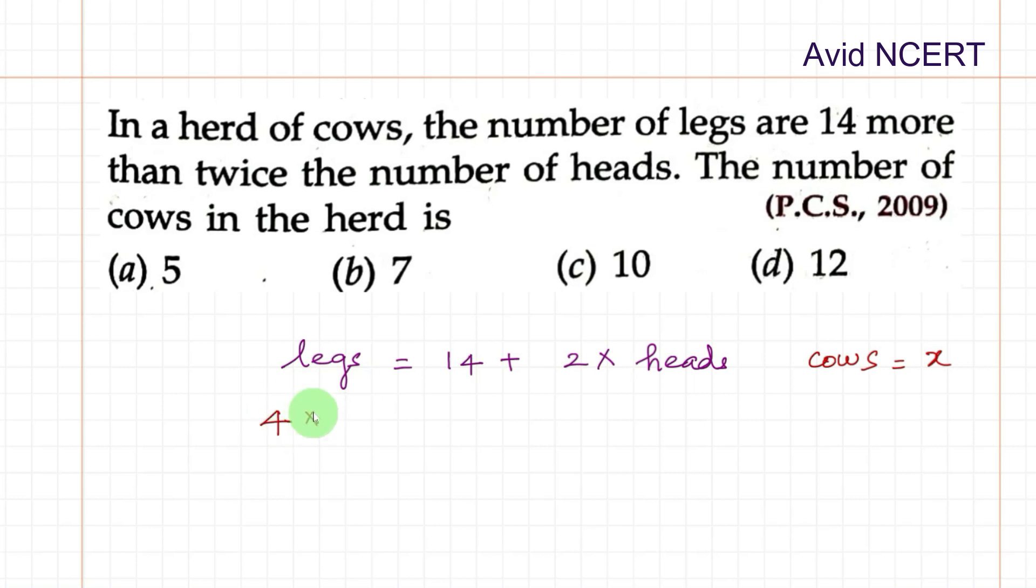So therefore, 4 times x equals 14 plus 2 times the number of heads. Each cow has 1 head, therefore 1x. By solving this we can find the number of cows.